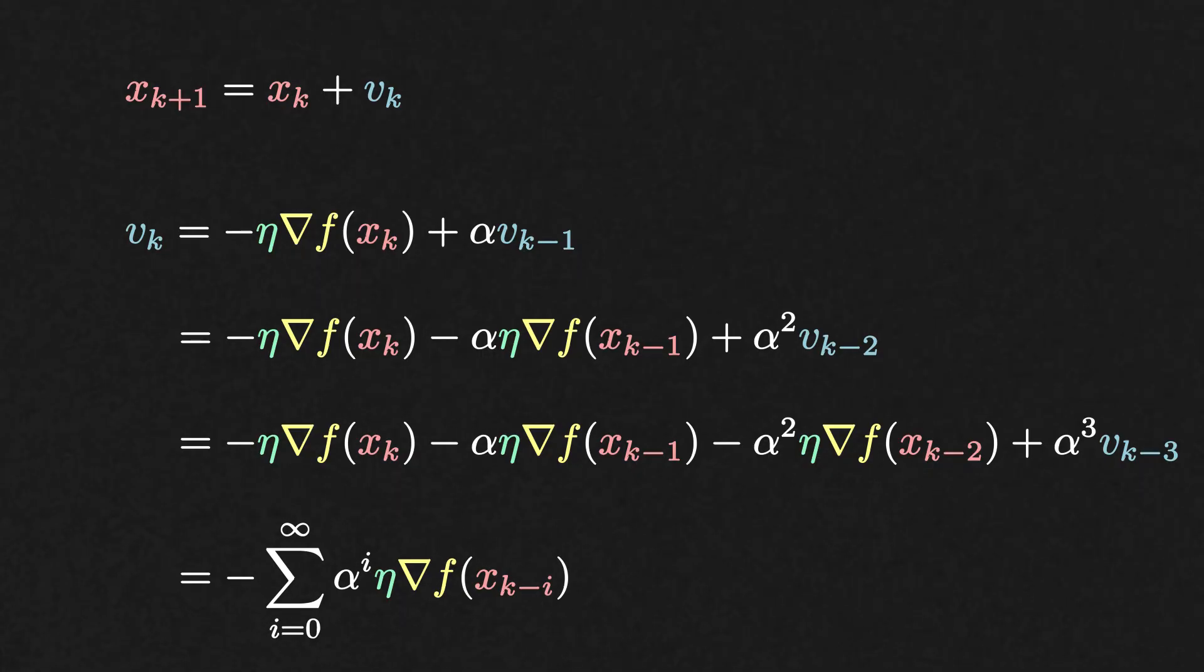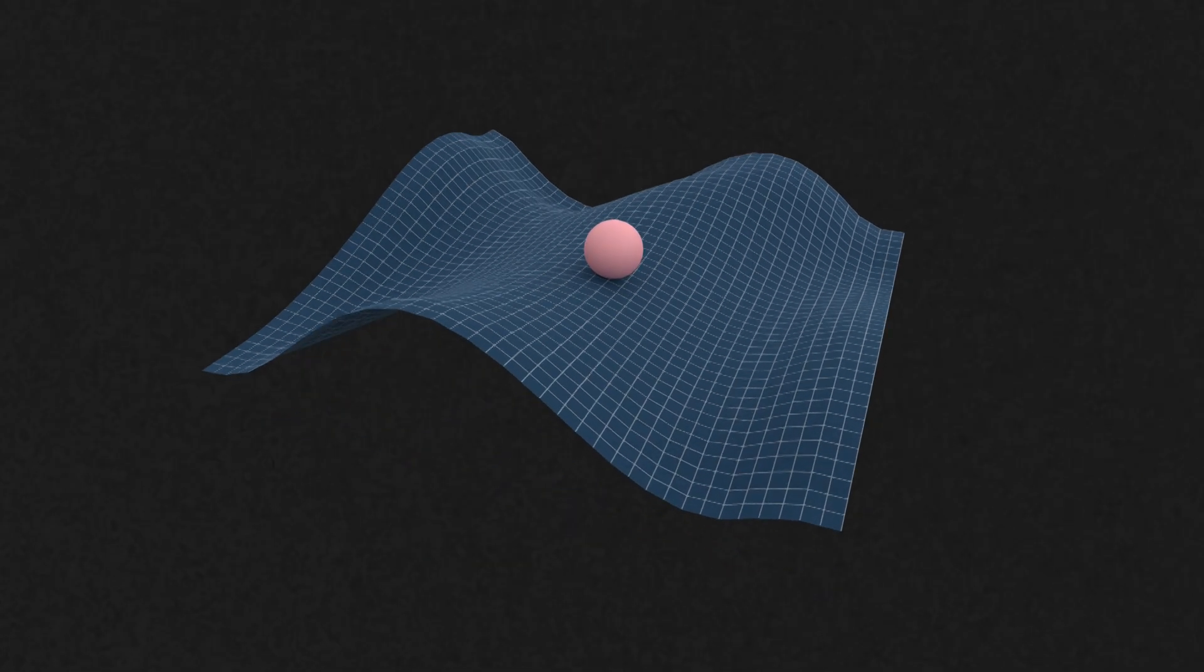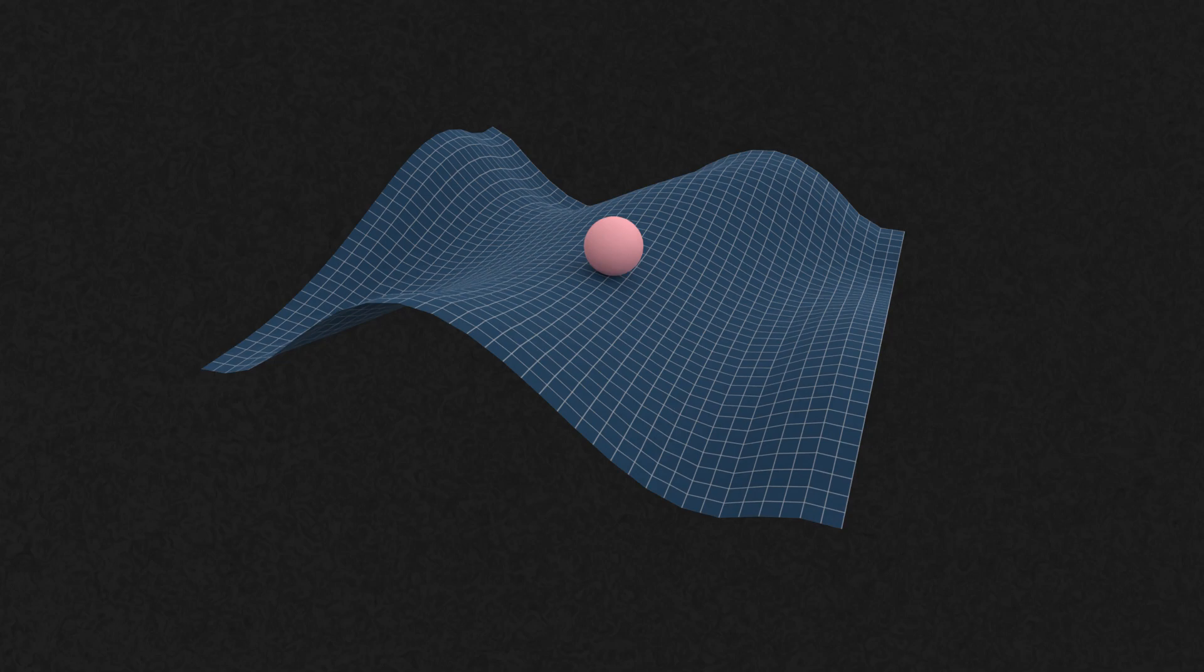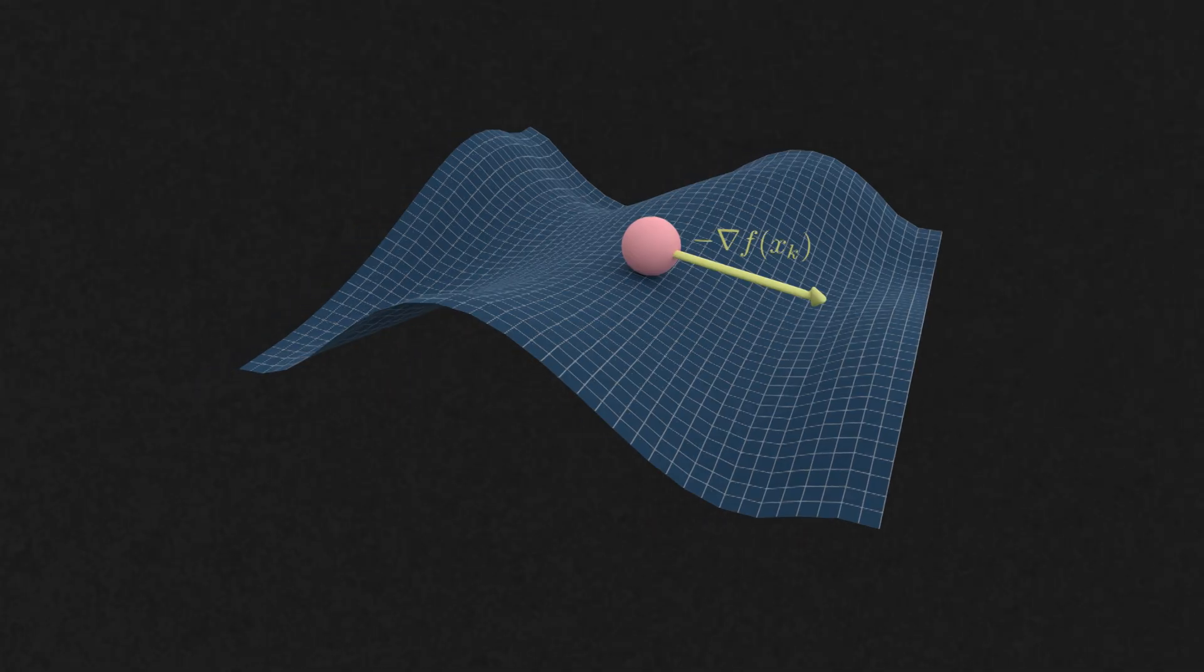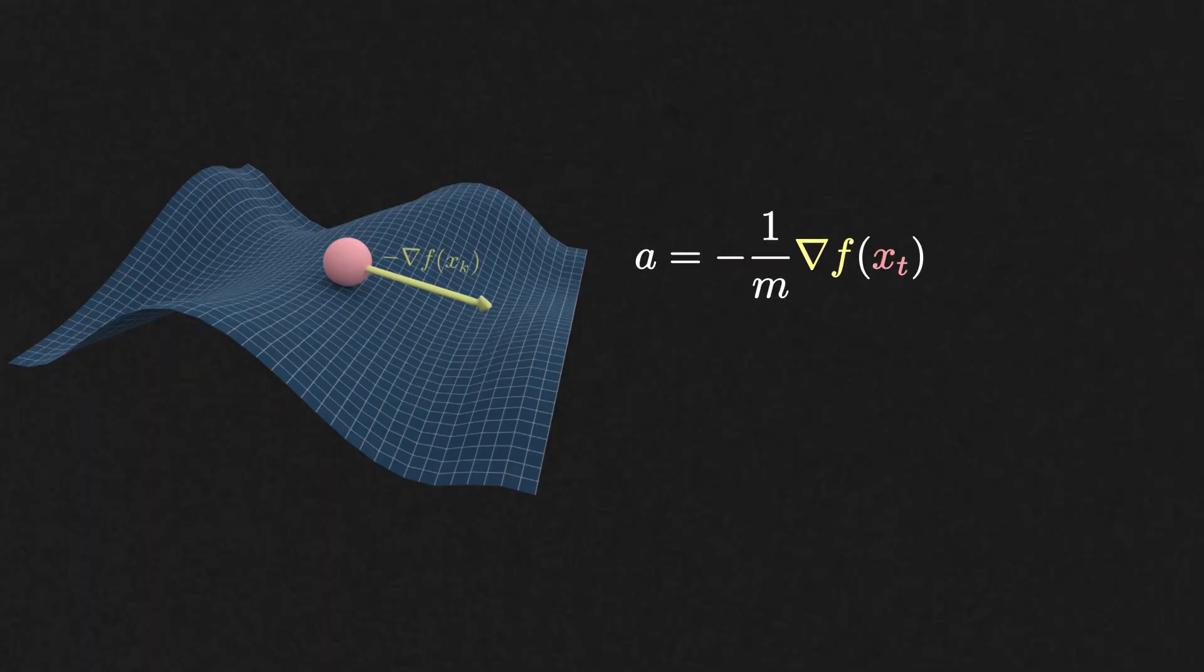The second interpretation is even more beautiful. You can visualize the current iterate as a particle swimming in a potential field given by the function f with friction. The force felt by the particle is the negative gradient of this function. Newton's law of motion, force equals mass times acceleration, lets us then link this force to the acceleration of the particle.